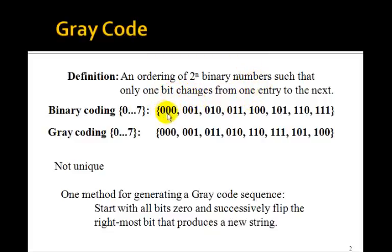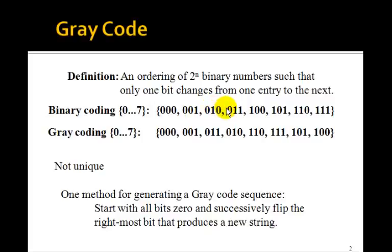For example, here's the familiar binary coding 0, 1, 2, 3, 4, 5, 6, 7. But notice, for example, in going from 1 to 2, both of the rightmost bits change — this goes from 0 to 1 and from 1 to 0. But in gray coding, we only want to change one bit.